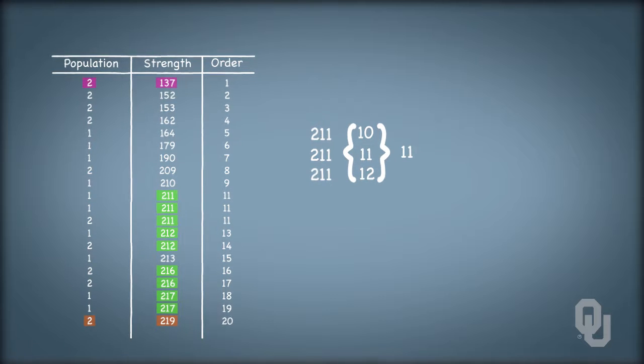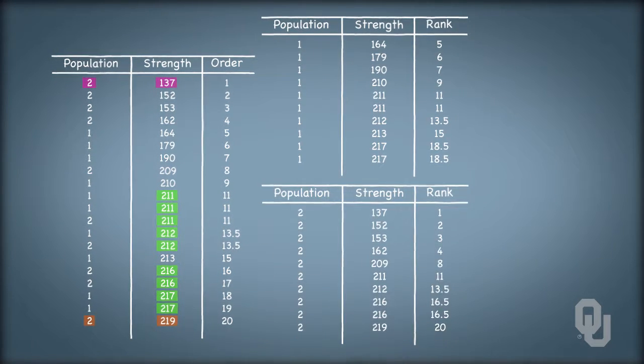Similarly, two cans have bursting strengths of 212 PSI. Their original order values were 13 and 14, and their ranks would be the average of 13 and 14, which is 13.5. We apply this approach to all twenty observations, getting a rank for each. Then we separate the populations out again, and we calculate the sum of the ranks for each population.